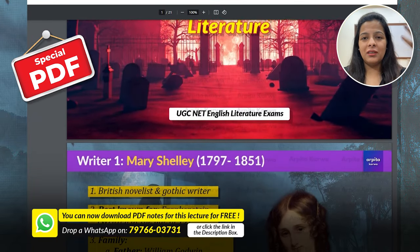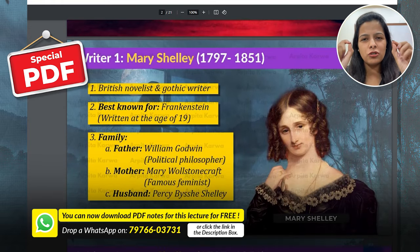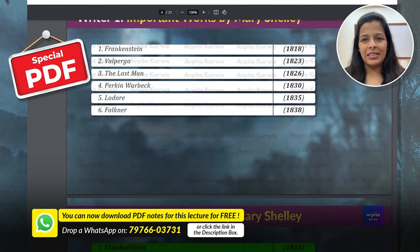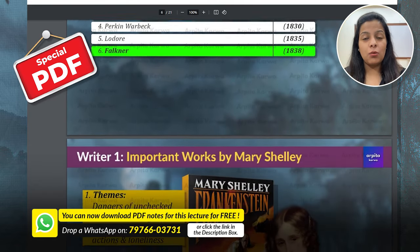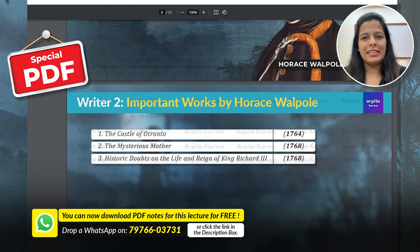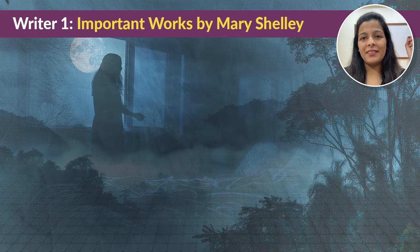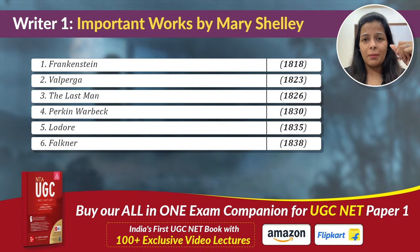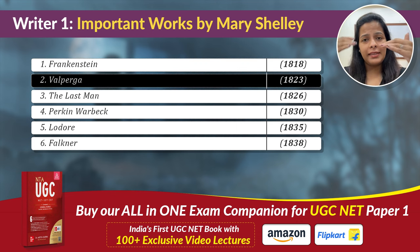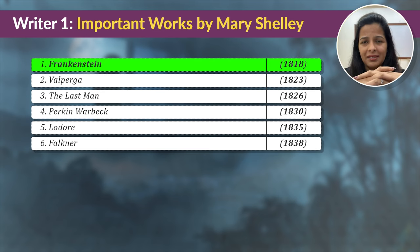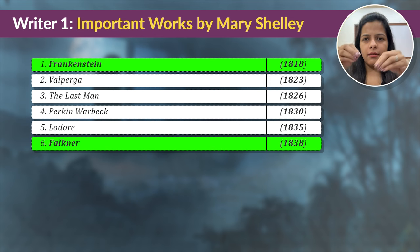An important announcement: there is a special PDF summarizing this entire video with exam-ready notes — you can get it by messaging on the WhatsApp number shown on screen or clicking the link in the description. Now looking at Mary Shelley's chronological list of works, the first is Frankenstein and the last is Falkner. Out of her six works, the most important ones are Frankenstein and Falkner. Let us discuss Frankenstein in a little detail.